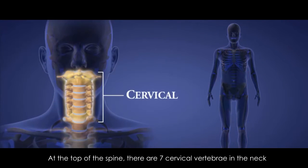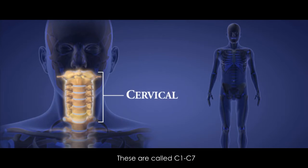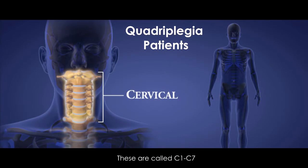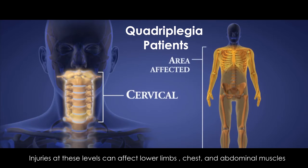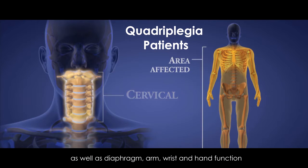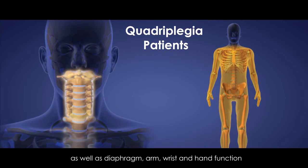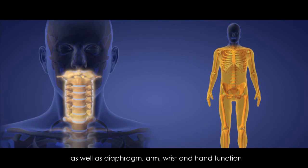At the top of the spine, there are seven cervical vertebrae in the neck. These are called C1 to C7. Injuries at these levels can affect lower limbs, chest and abdominal muscles, as well as diaphragm, arm, wrist and hand function.